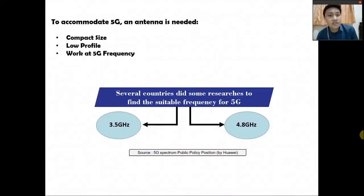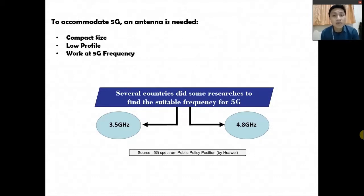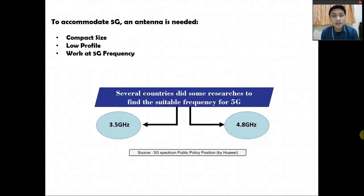To accommodate 5G, an antenna is actually needed because the antenna is the essential part of wireless communication. It's like the first interface that connects a device to another device. For 5G, the antenna needs to be compact in size because it will be mounted at the back of a smartphone, it needs to be zero profile but easy to fabricate with low-cost production, and it needs to work at 5G frequency. Several countries have already done research to find the suitable frequency for 5G, including 3.5 GHz and 4.8 GHz. You can find the source at the 5G Spectrum Public Policy Position released by Huawei.